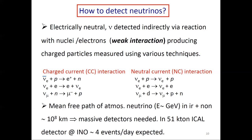The mean free path of atmospheric neutrinos of around 1 GeV is of the order of 10 to the 8 kilometers, so you need massive detectors. In a 51 kiloton detector like INO, you would only get about four events per day. The background on the surface is about 10 orders of magnitude higher than the signal, so you must go underground. Even underground there is a background about 10,000 times larger than the signal, but this can be managed using characteristic signatures and an outer veto volume.